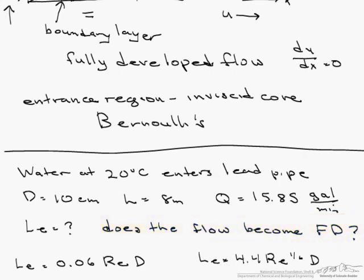So what does that mean? What it means is if the entry length is greater than 8 meters, the entire pipe is still the entrance region and we don't have any fully developed flow.